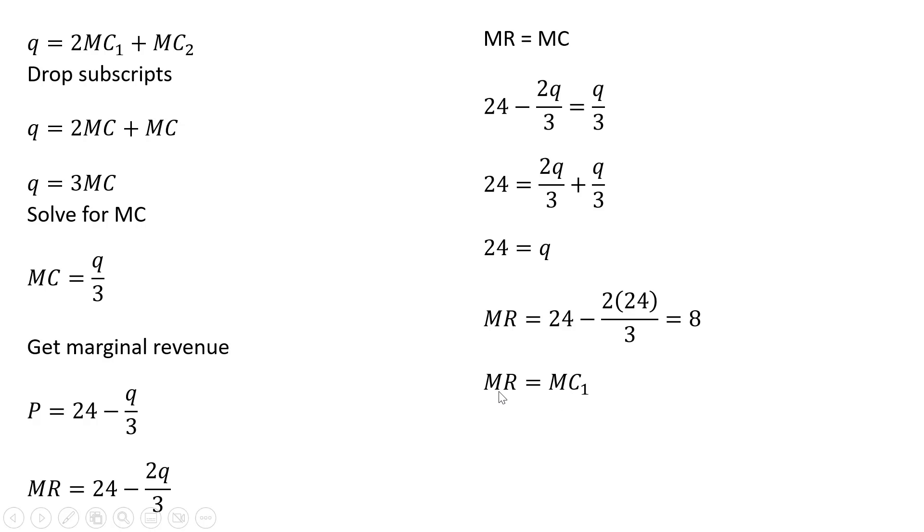So profit maximization requires that marginal revenue equal to marginal cost in each plant. So we're going to set marginal revenue 8 equal to the marginal cost in plant 1. And the marginal cost in plant 1 was given by the equation earlier. And now solving this for Q subscript 1, 8 divided by 0.5 is 16. So out of this 24 units of output, 16 will come from plant 1.